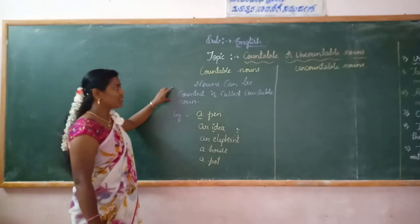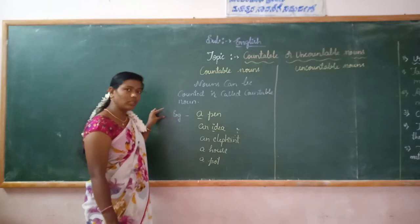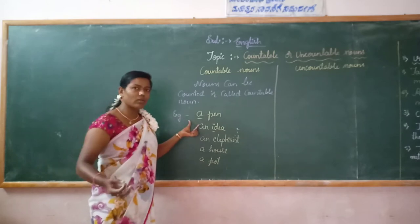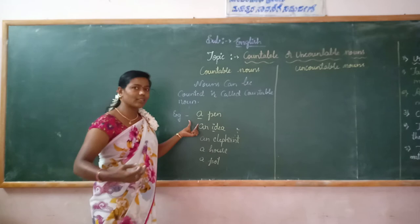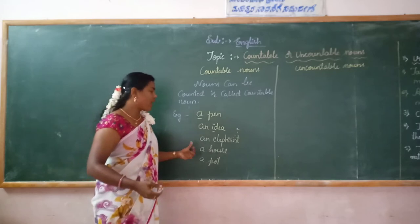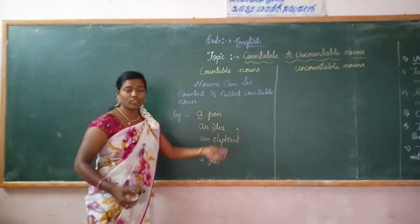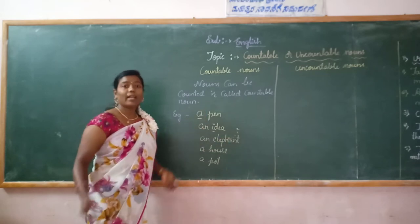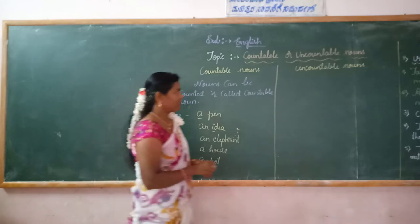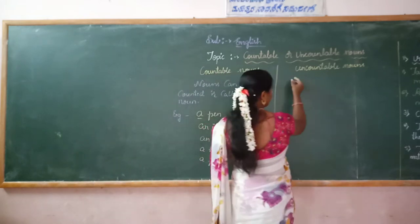Nouns that can be counted are called Countable Nouns. Examples: a pen, an idea, an elephant, a house, a pot, a watch, and a book, a phone, etc. And now, Uncountable Nouns.